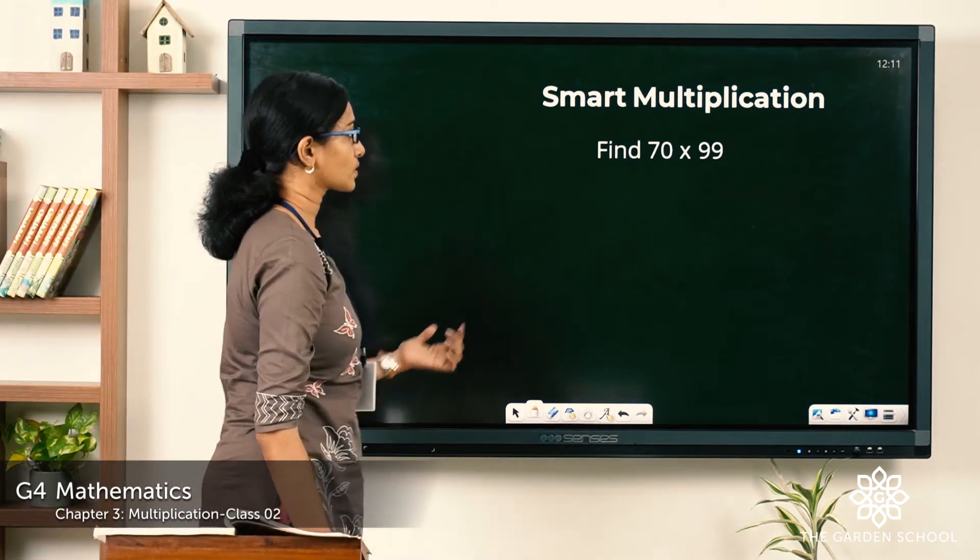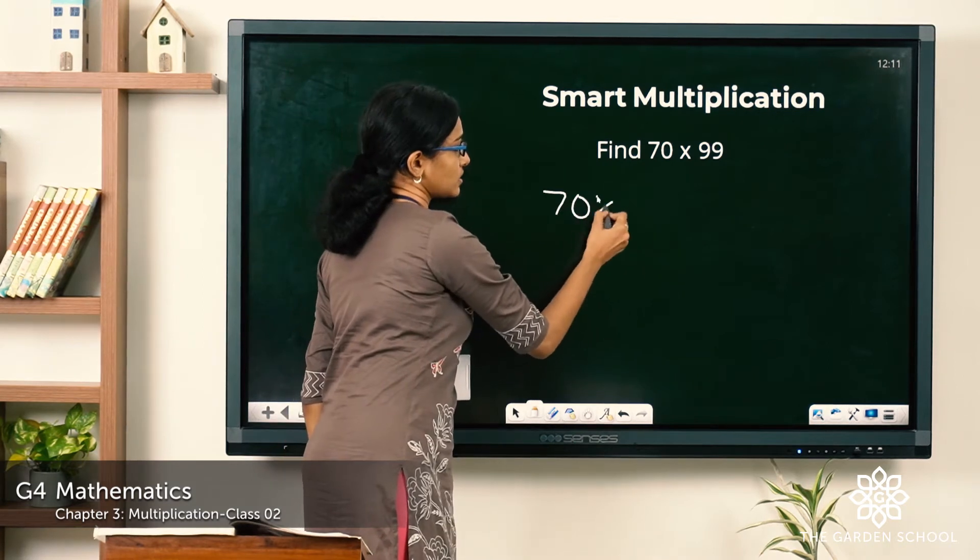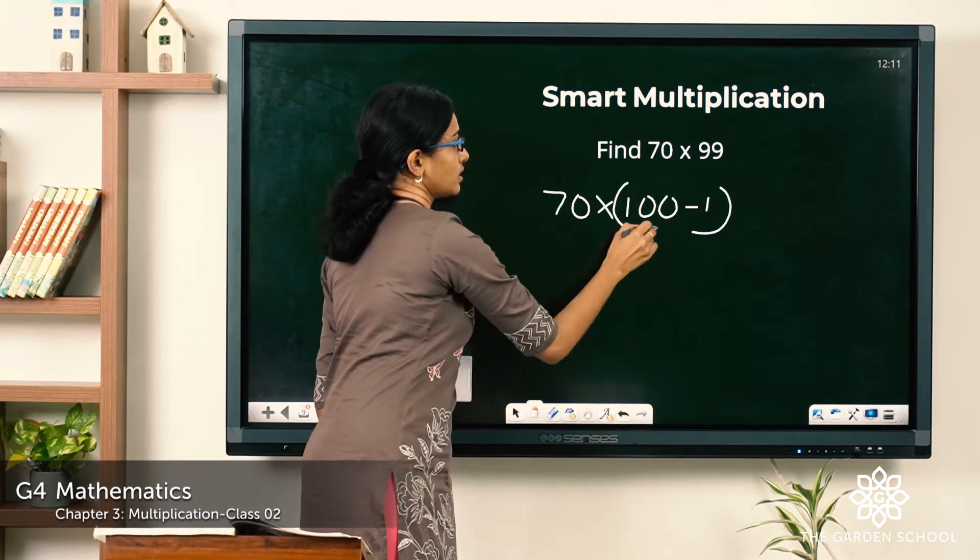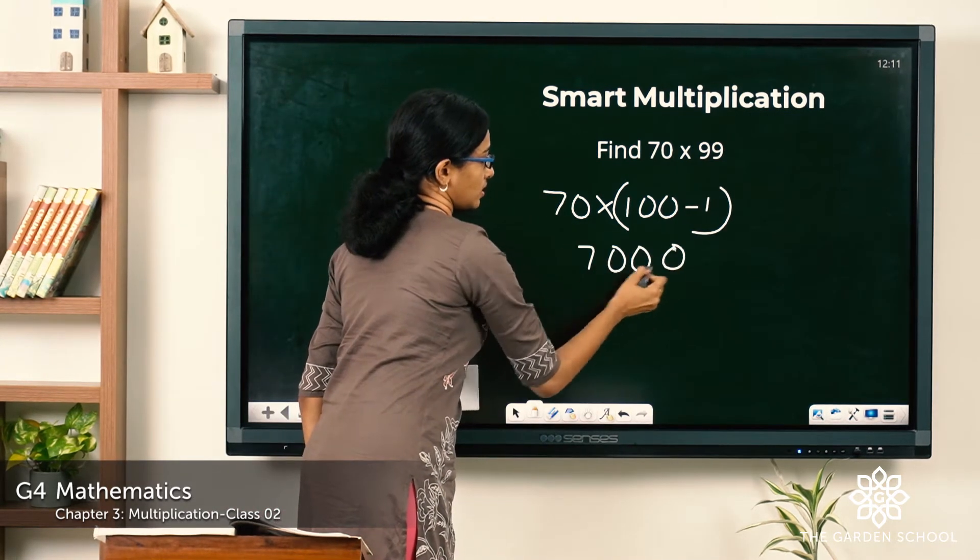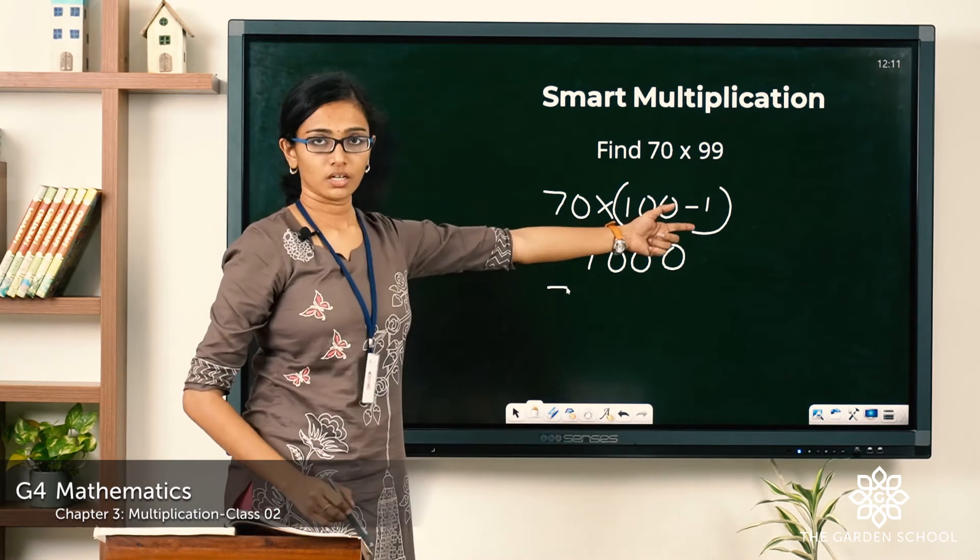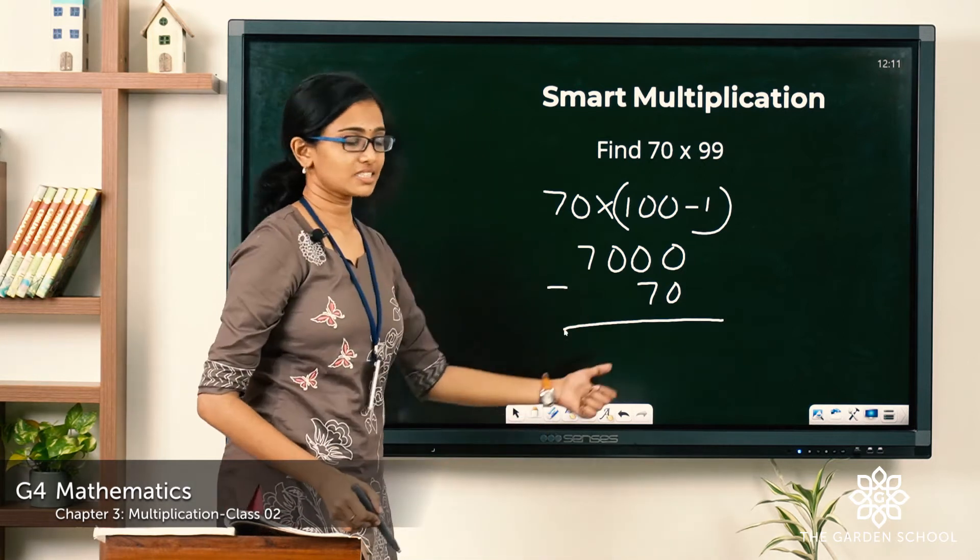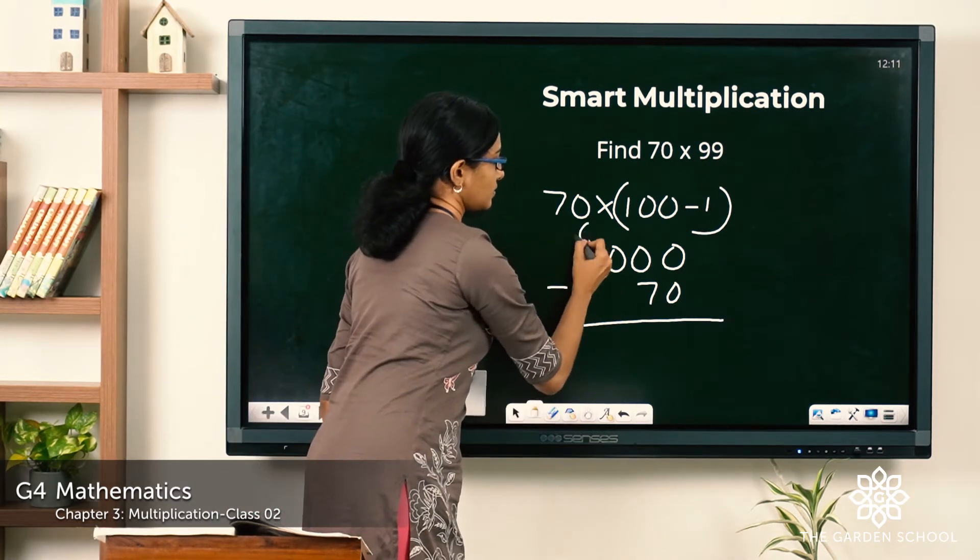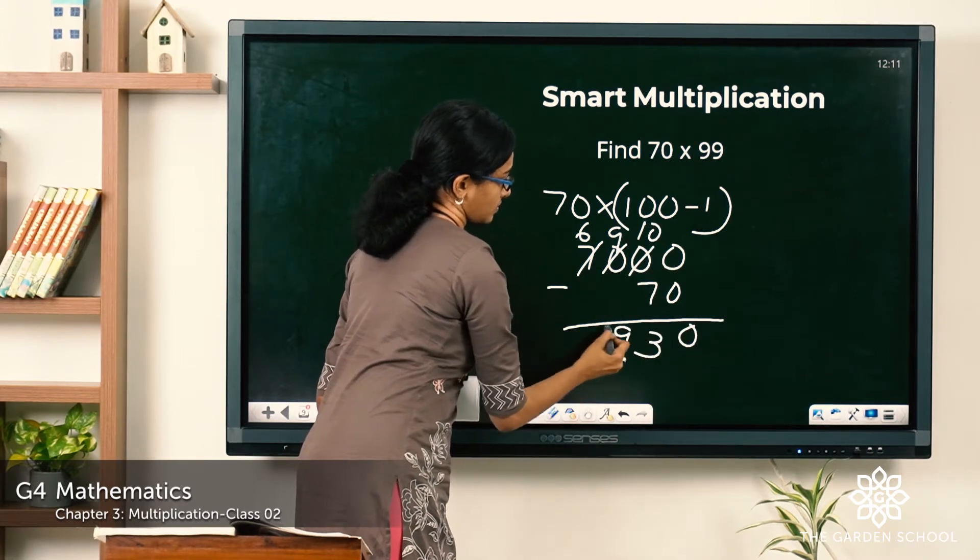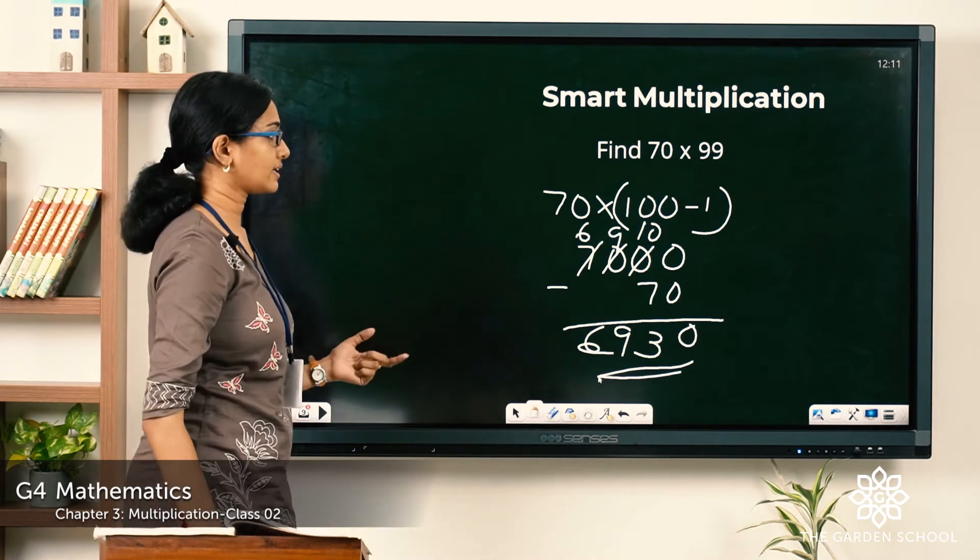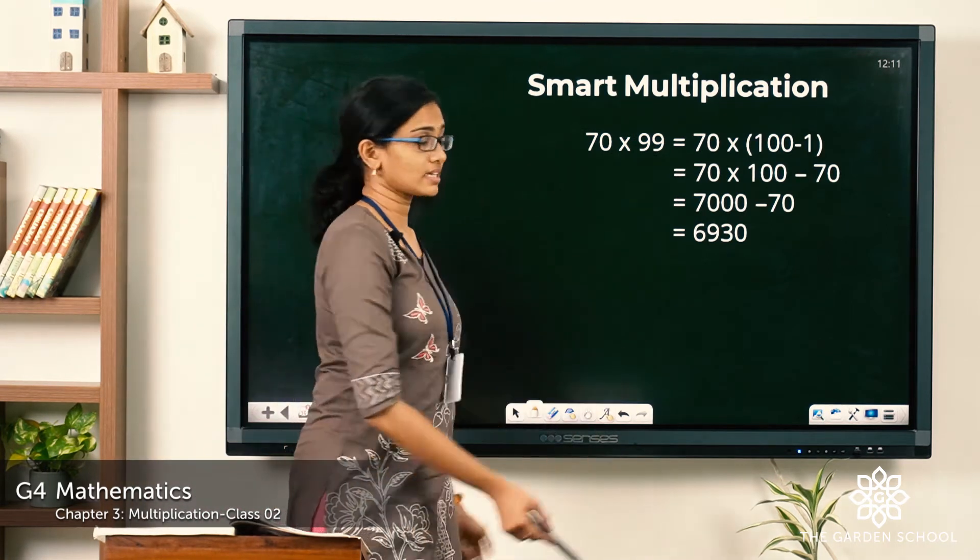Let's see one more example. 70 into 99. So it can be written as 70 into 100 minus 1 which is equal to 70 into 100. It is 7,000 minus 70 into 1, which is 70 itself. Just subtract which gives you the answer in just two easy steps. Here the product is 6930. That is the product of 70 into 99.